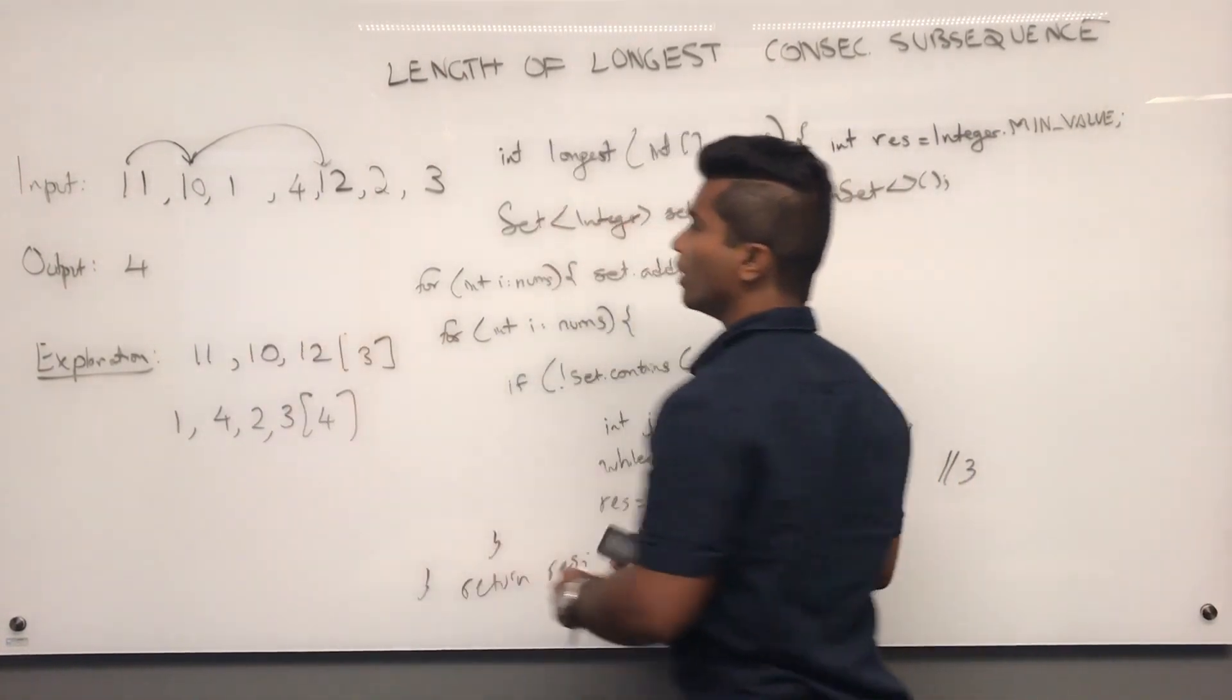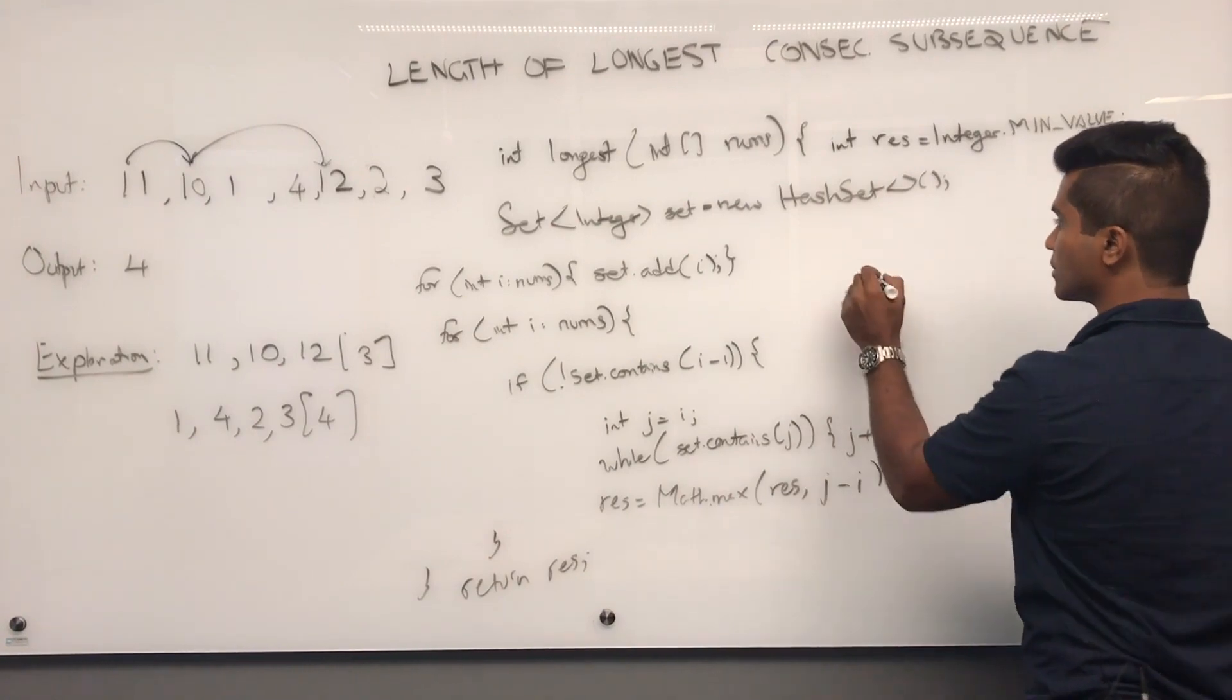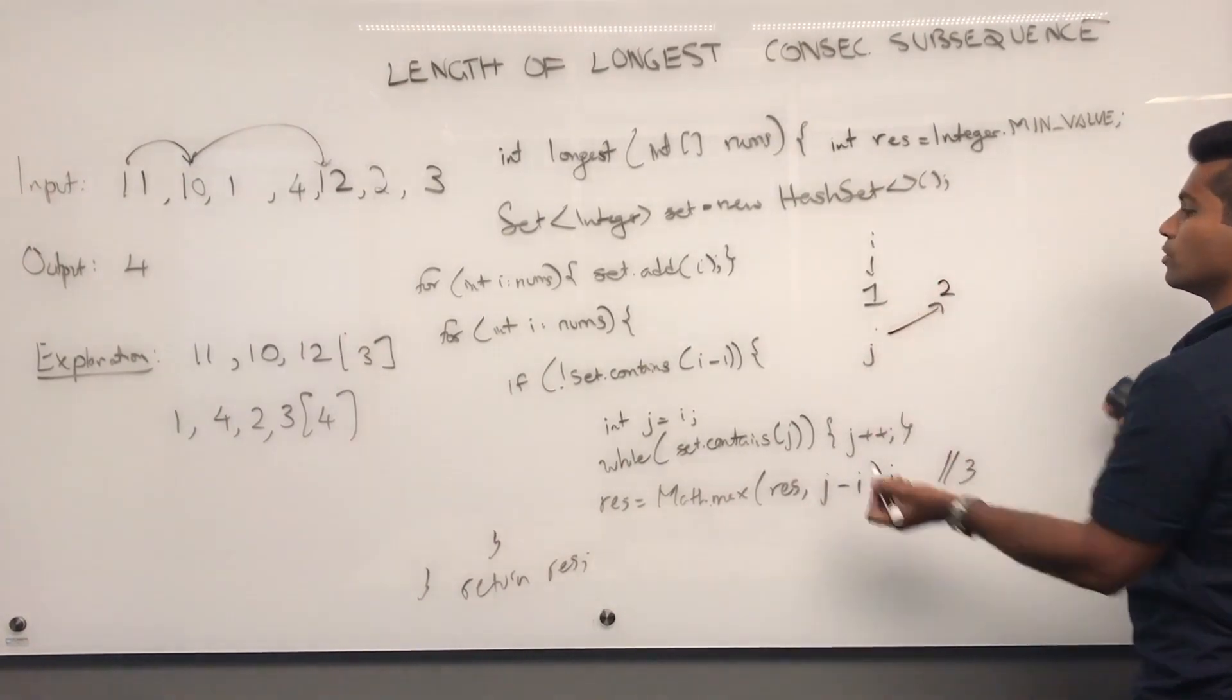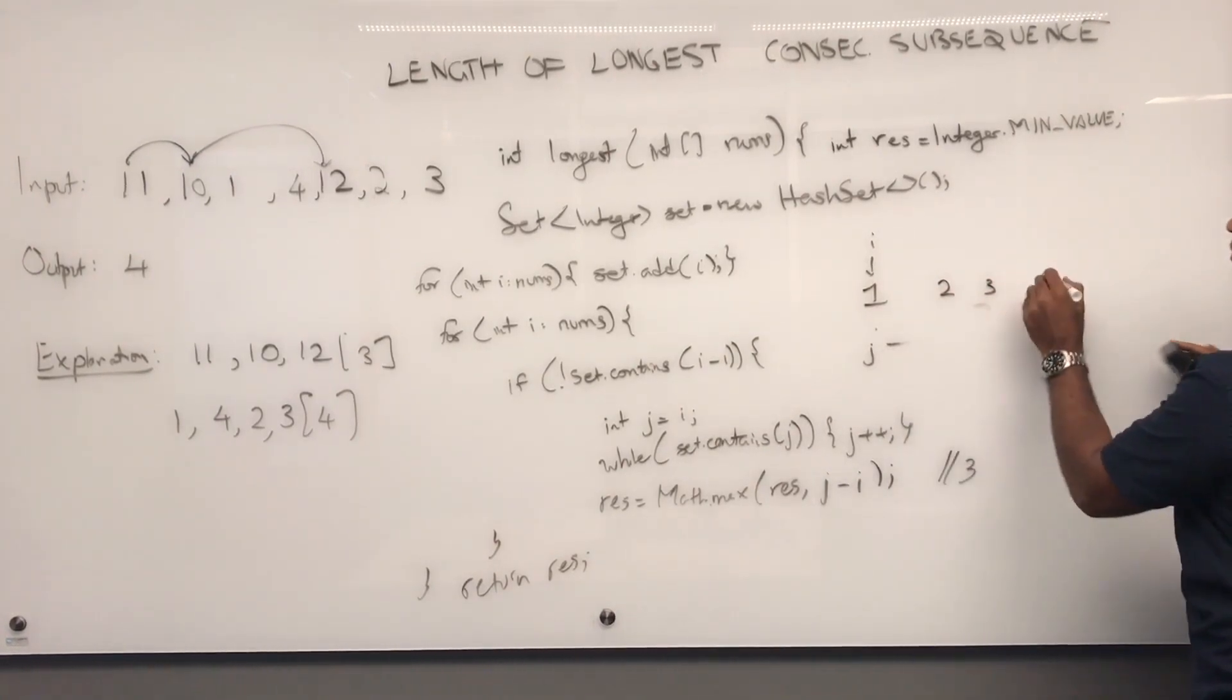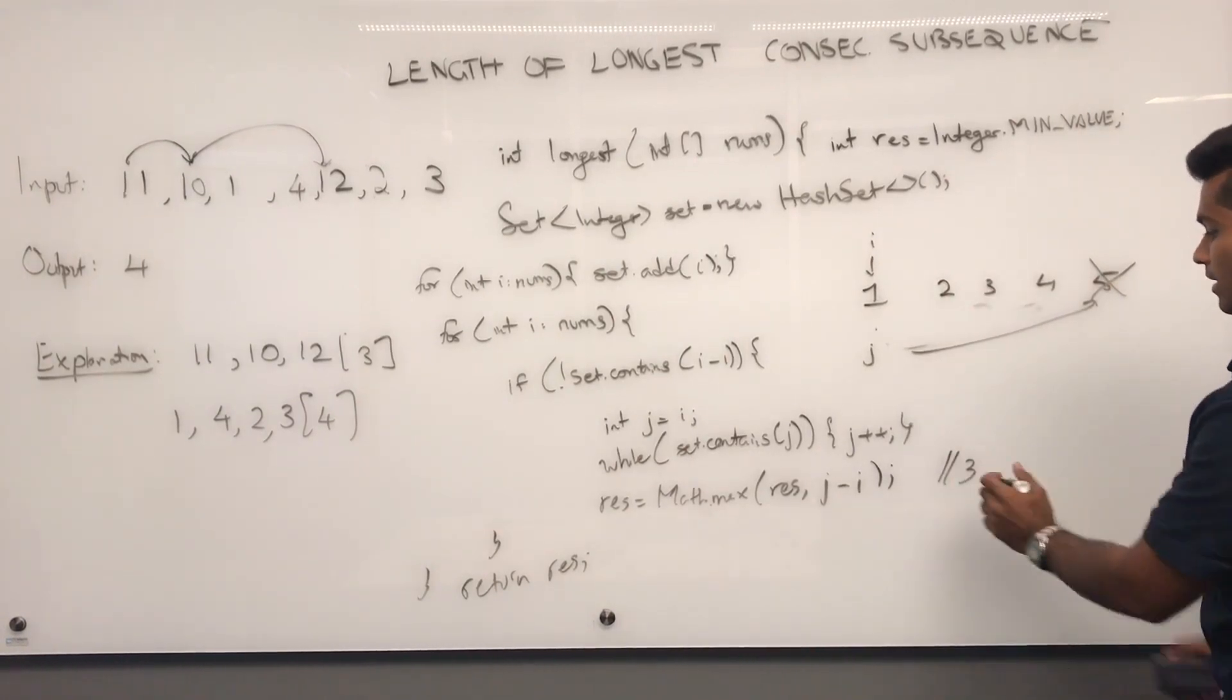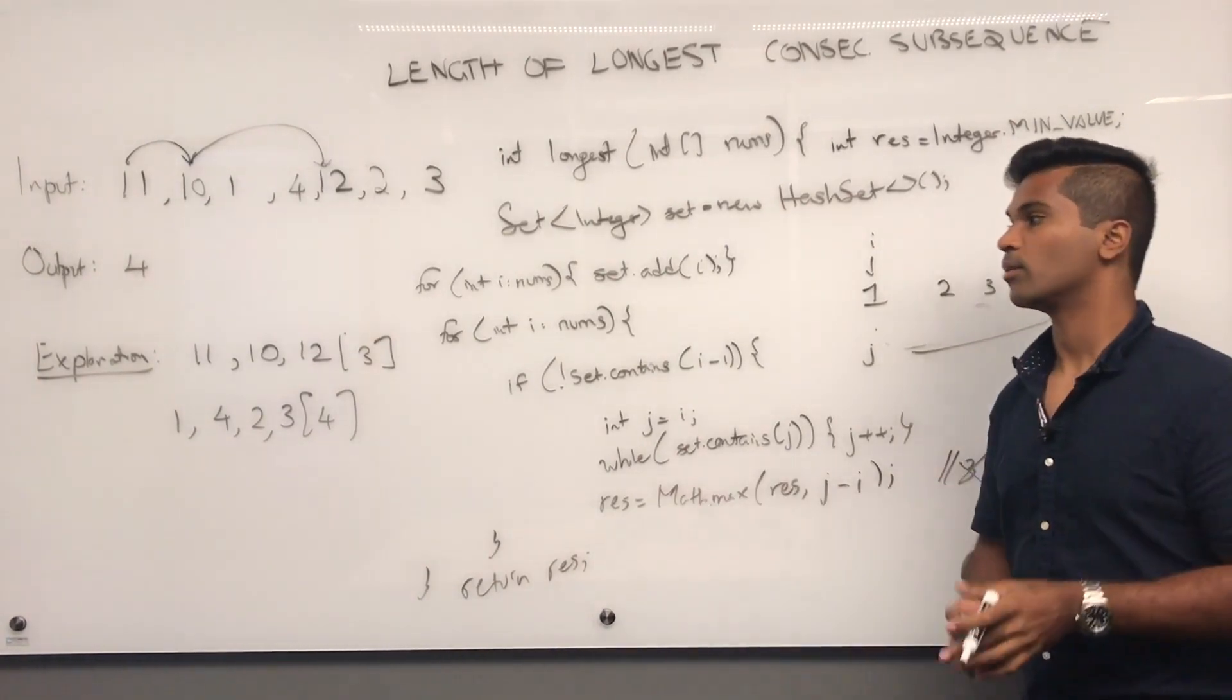We go to one. One is going to see that there's nothing less than one. So, it's going to try creating an array. So, one is i and it's also going to be j. Now, it's going to try incrementing. Two. Two is there. Three. Three is there. Four. Four is there. And then, five. Five is not there. So, j minus i is going to be five minus one, which is four. And then, result is going to get incremented. It's going to get swapped to four because four is greater than three. And that's how we return result.